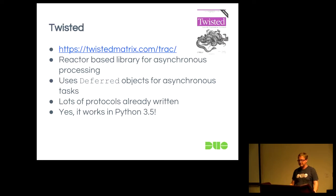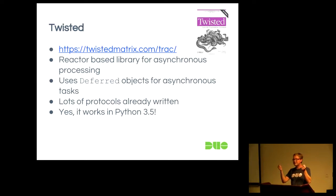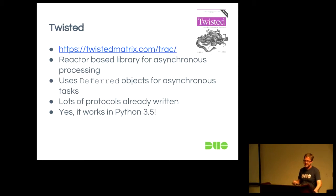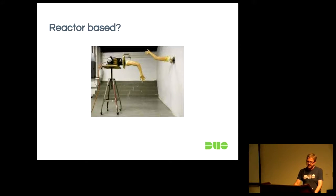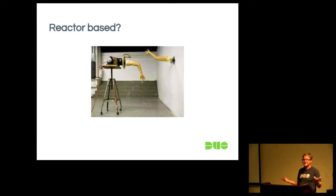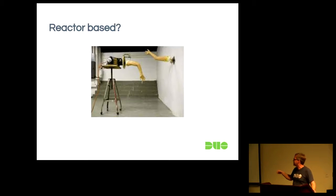Twisted is a reactor-based library using deferred objects. Both deferreds and greenlets represent a future value. Twisted has many protocols already written — IRC, email, web — and it does work in Python 3.5. What does reactor-based mean? A reactor is basically a loop that does work. Imagine a machine that gives high fives. Instead of hands standing in line, they all stand around the machine. For each spin of the machine, it gives a high five to each entity. So 12 rotations accomplish the same work as 24 rotations sequentially.